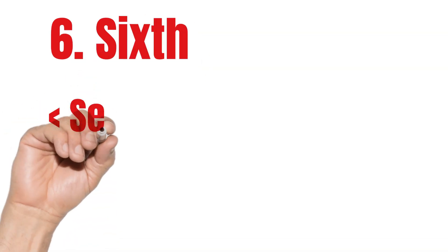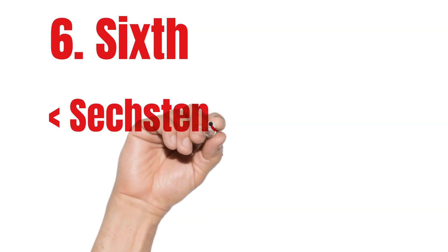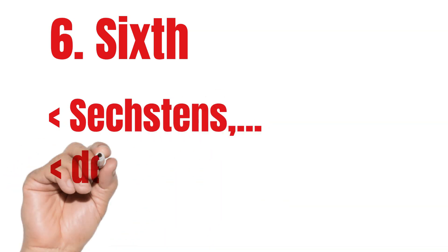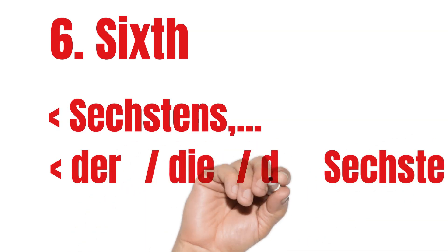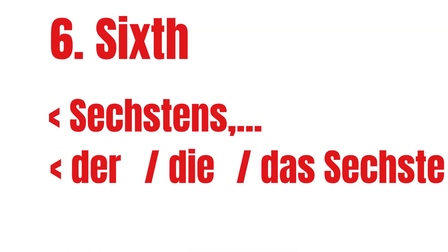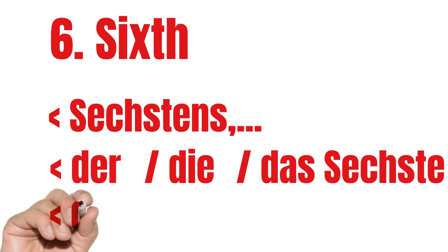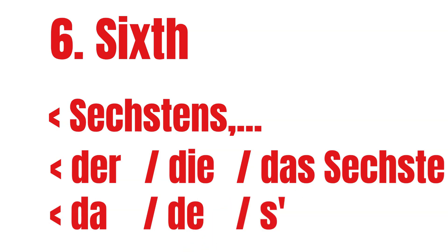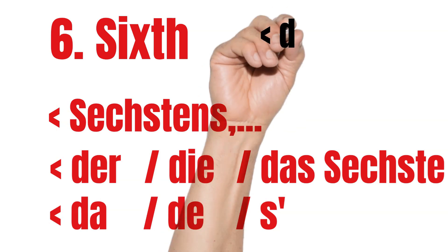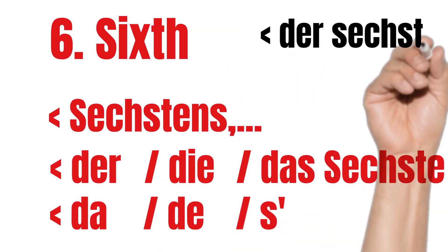Sixth. For numbered lists, sixth means Sechstens. When we use articles: der Sechste, die Sechste, das Sechste. In Austrian German you often come across der Sechste, die Sechste. When talking about months, for example the 6th of June: der Sechste Juni.